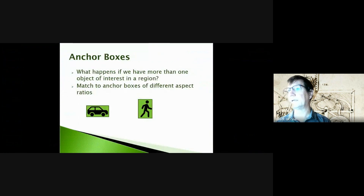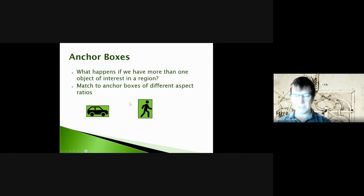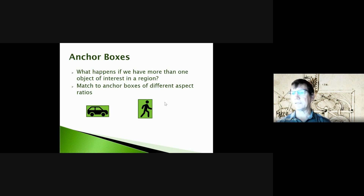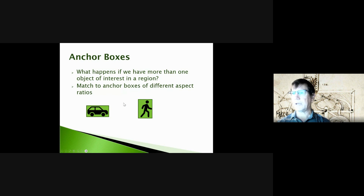One of the things we're going to use is that intersection over union concept again when we work with anchor boxes. We're going to match to things that have a high IoU, and that helps us match things to a particular aspect ratio or anchor box.